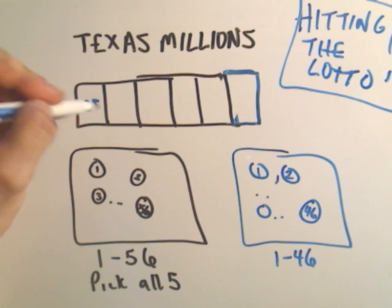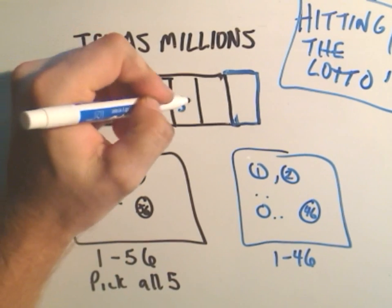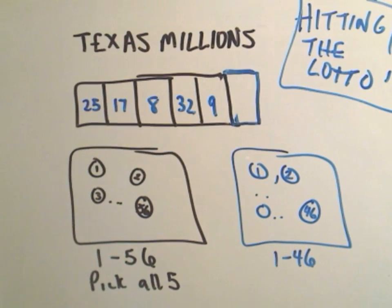So maybe it's 25, 17, 8, 32, 9. You have to pick those five balls. The order that they come out doesn't matter, so you can pick the balls in any order.